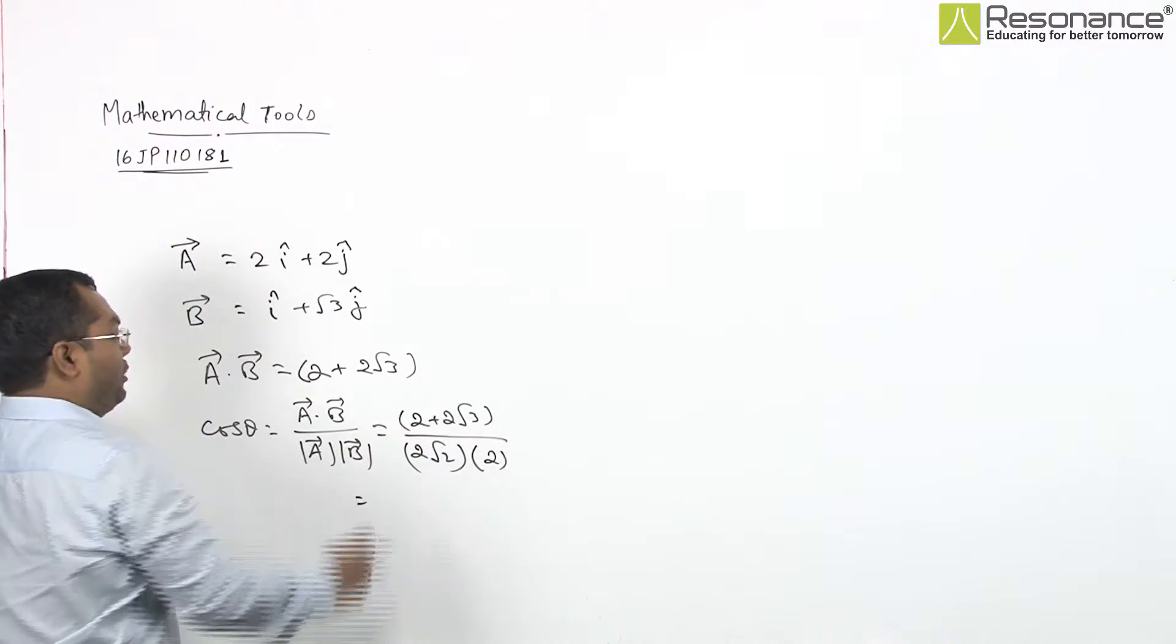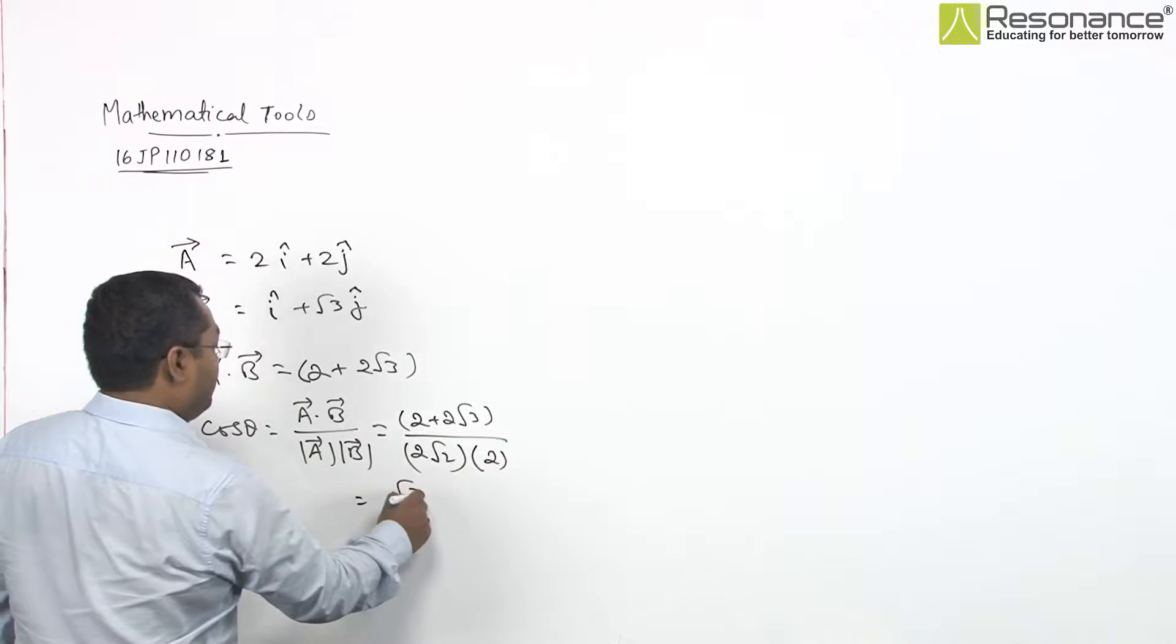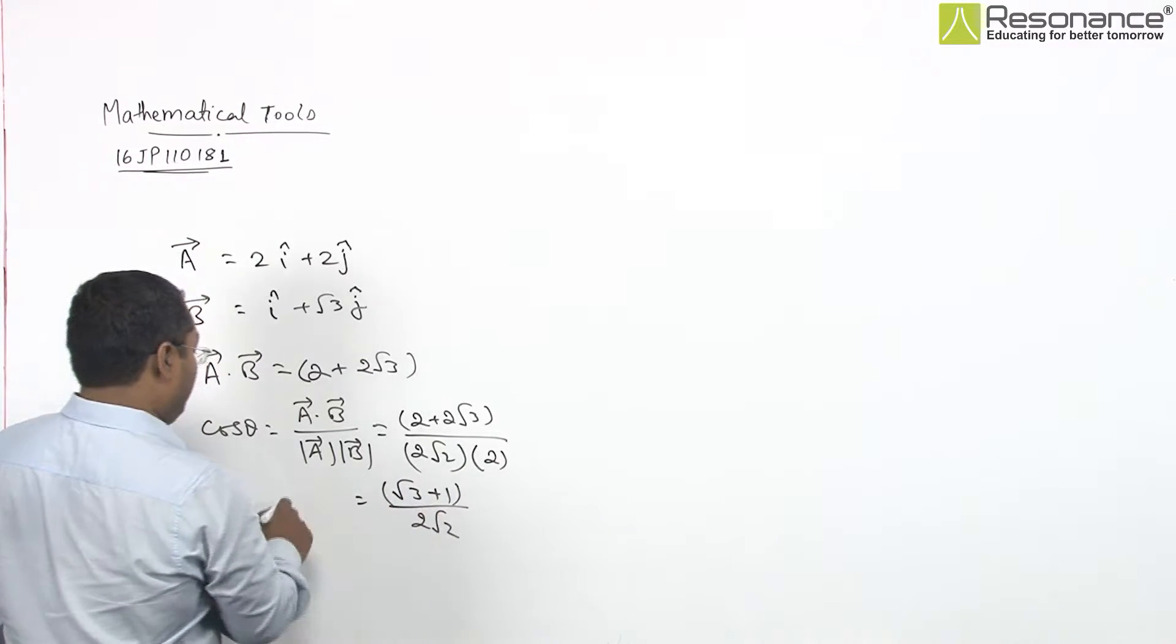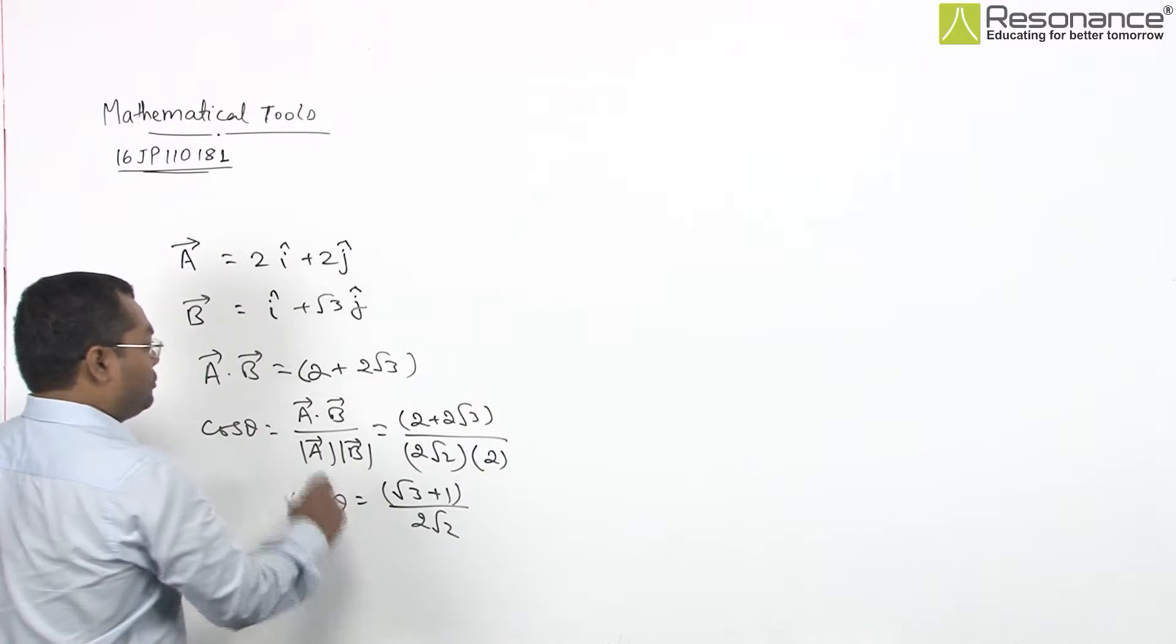By taking common from here, we will write root 3 plus 1 upon 2 root 2, which is cos theta equals.